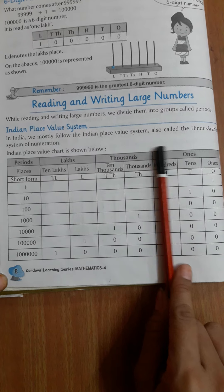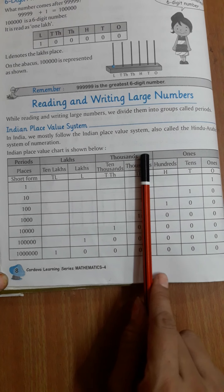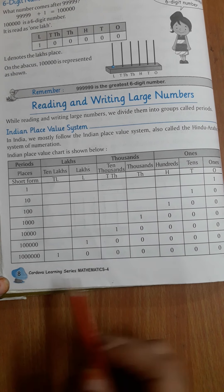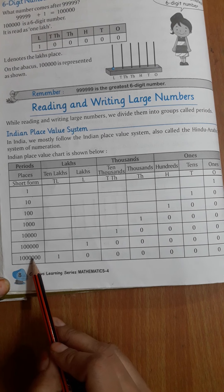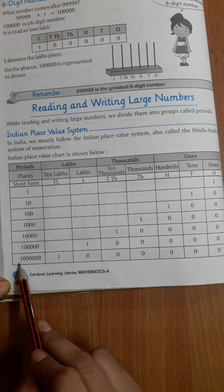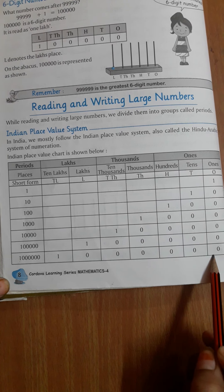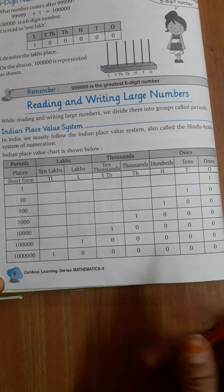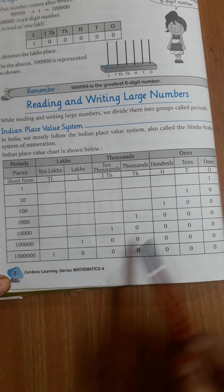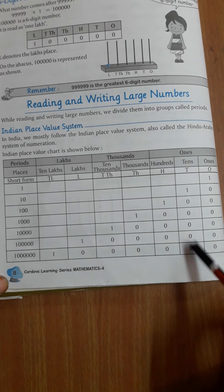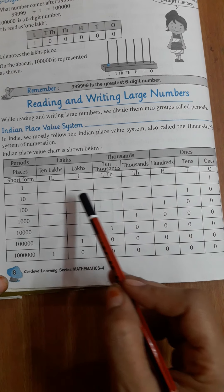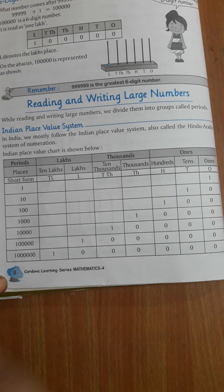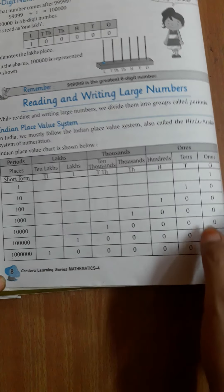Ones में तीन digits आएंगी — ones, tens, hundreds. Thousands में — thousand and ten thousand. Lakhs में — lakhs and ten lakhs. Ten lakhs तक कुल seven numbers होते हैं. यह था हमारा Indian place value chart. अगर आपको समझ में नहीं आता कि कैसे लिखना है, तो आप complete table बना सकते हैं: ones, tens, hundreds, thousands, ten thousands, lakhs and ten lakhs.